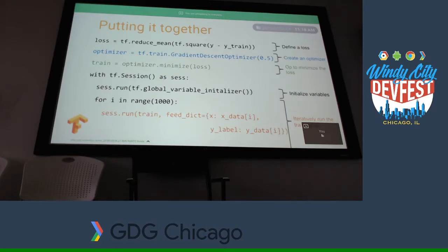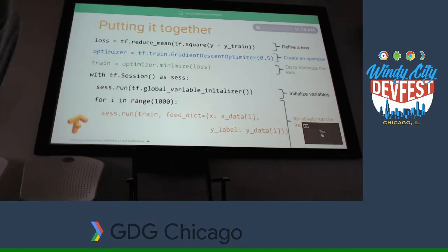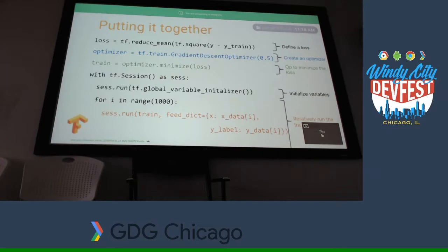How do you know how many iterations you should go? We will come to that point — how do you know that you're at a good iteration? So: take your base formula, find a loss, find an optimizer, minimize your loss using that optimizer.